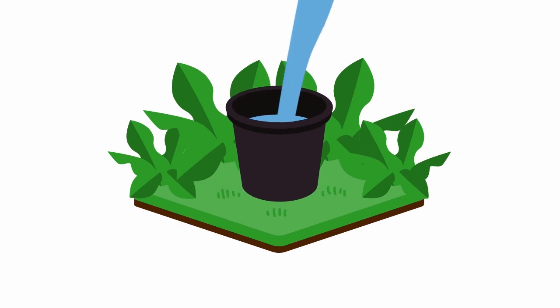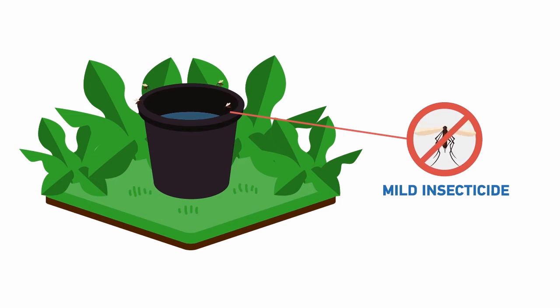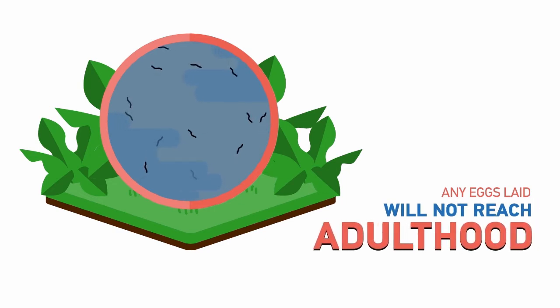Once the bait in the bottom combines with water, it attracts the female mosquito to the trap. She lays eggs, and then a mild insecticide kills her. The larvacide prevents any eggs laid from reaching adulthood. This reduces the mosquito population safely and effectively.